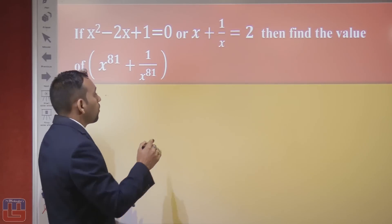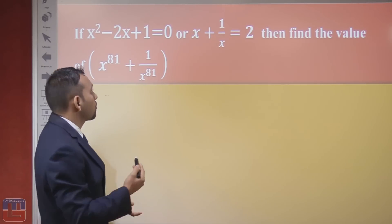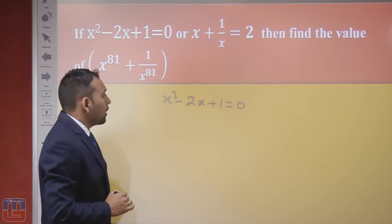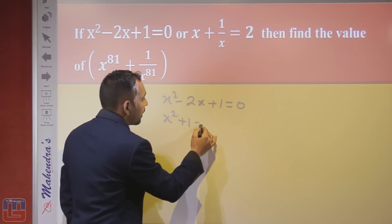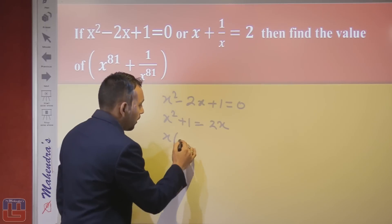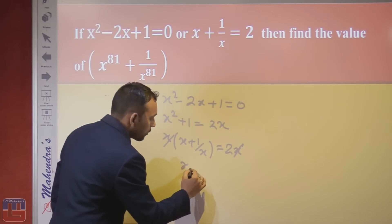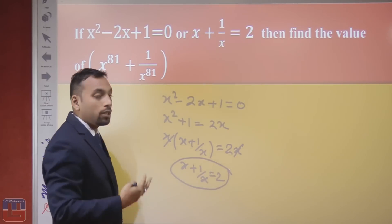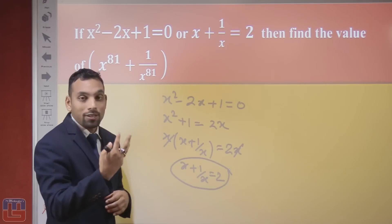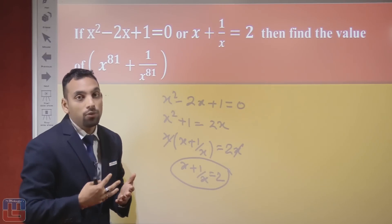Let me show how these two forms come from the same expression. Starting with x squared minus 2x plus 1 equals 0, we can rewrite it as x squared plus 1 equals 2x. Taking x as common on the left side gives x plus 1 upon x equals 2, since the x cancels out. So if you find the question in either form, do not be confused — both are the same equation, and examiners may write it in either form.